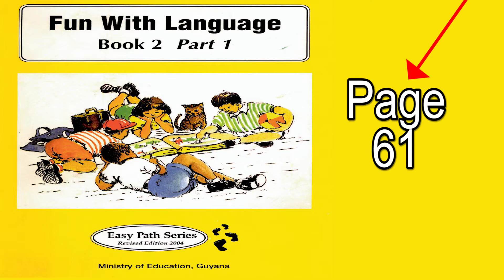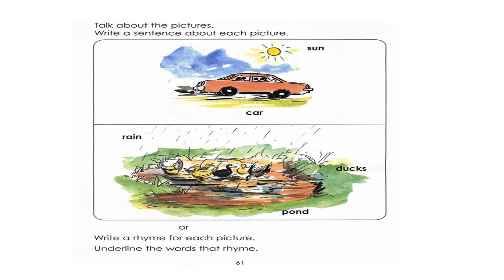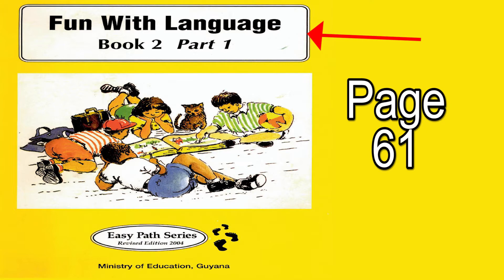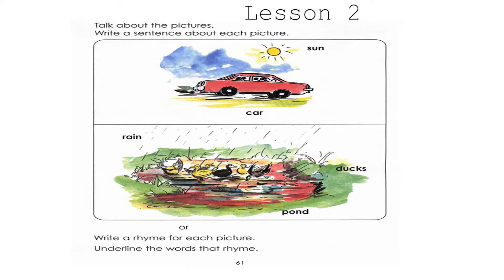When you have your book and you turn to page 61, you should see this. If you can see this picture on page 61, then you have the right book. At the very top of the page, it says Lesson 2.